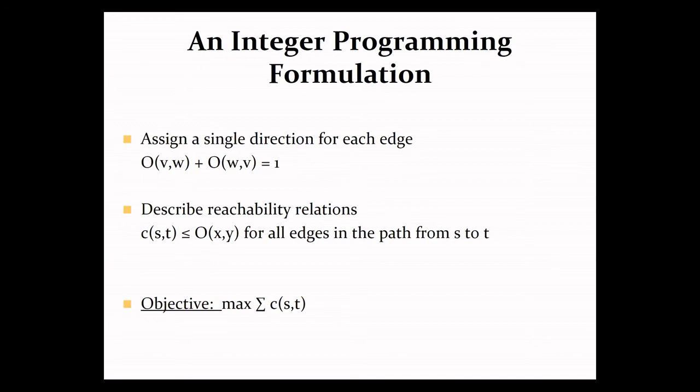So the basic formulation that we use is as follows. We introduce two sets of binary variables. One set corresponds to the orientation. So OVW is one if and only if the edge should be directed from V to W. The other more interesting set talks about reachabilities. So to check whether there is a path between S and P, we use the fact that in a tree, there's a single path between every pair of vertices, which means that to check if the path is realized, all we have to do is to check whether all the edges along the path, which we know in advance, are oriented in the intended manner.